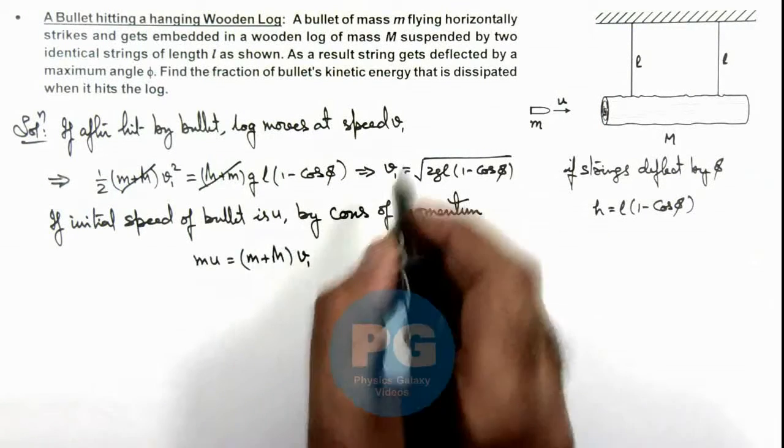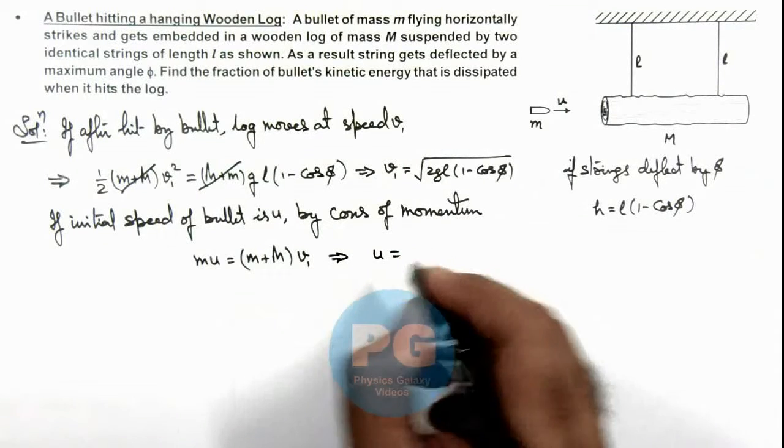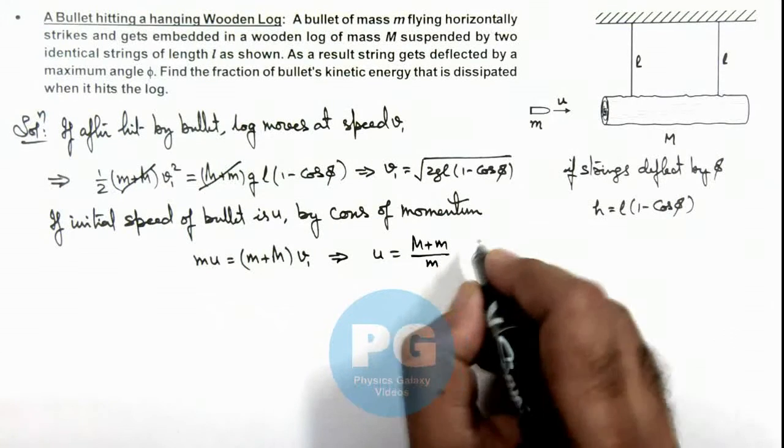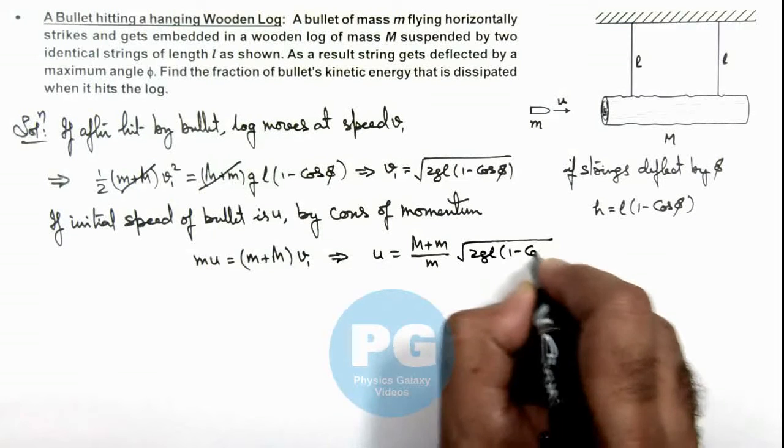Here the value of v₁ we are already aware of, so this gives us the value of initial speed of bullet which is (m + M)/m × √[2gl(1 - cos φ)].